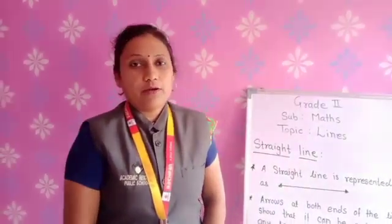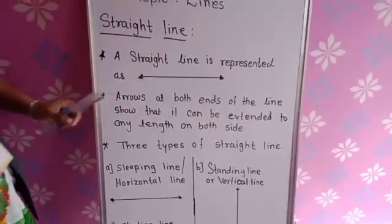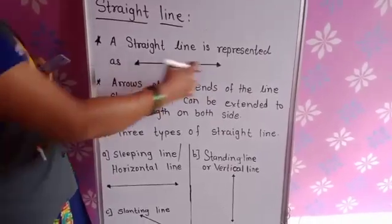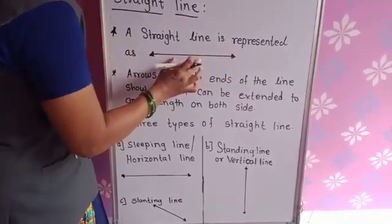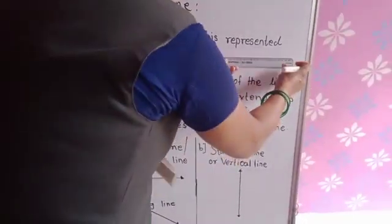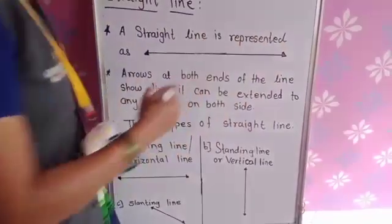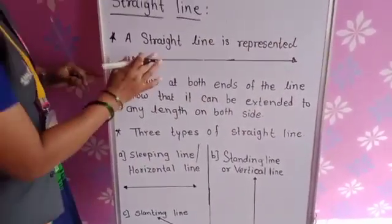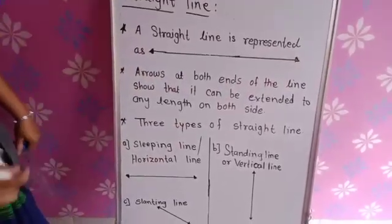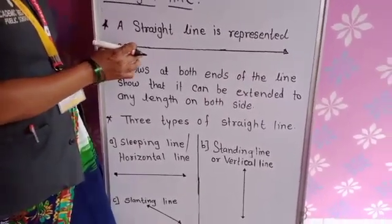Let's learn more about the straight line. A straight line is represented with arrows at both ends. These arrows show that it can be extended to any length on both sides. We can extend it in both directions.